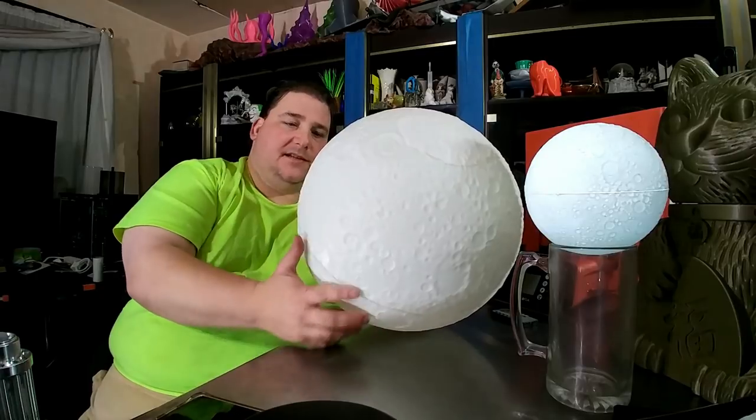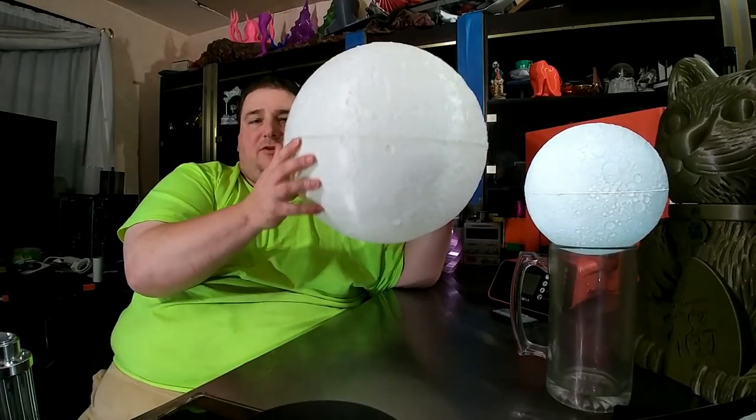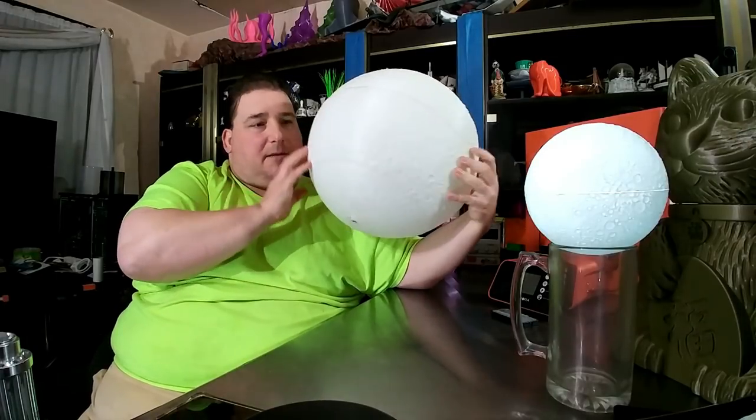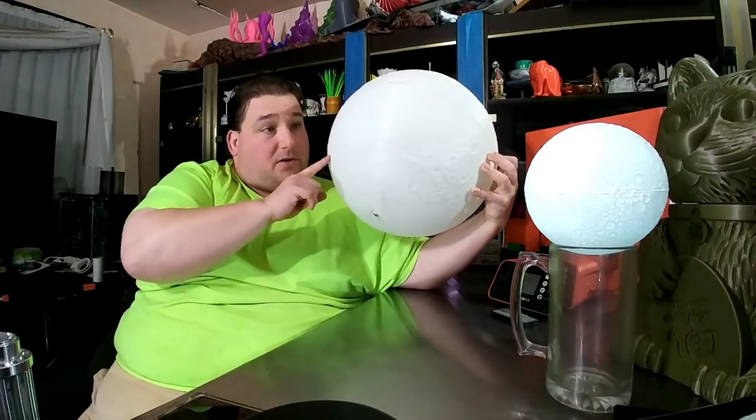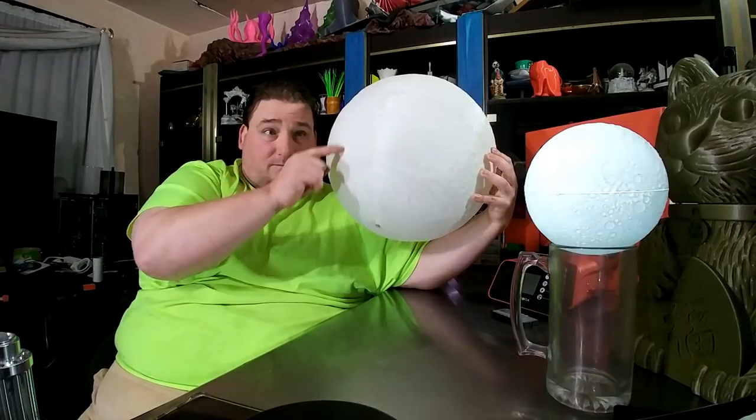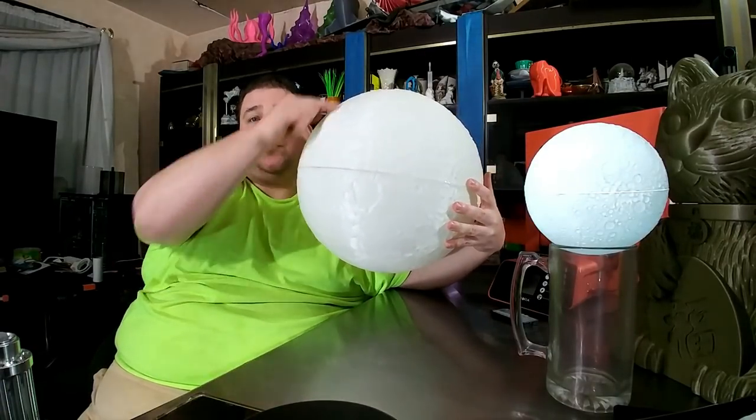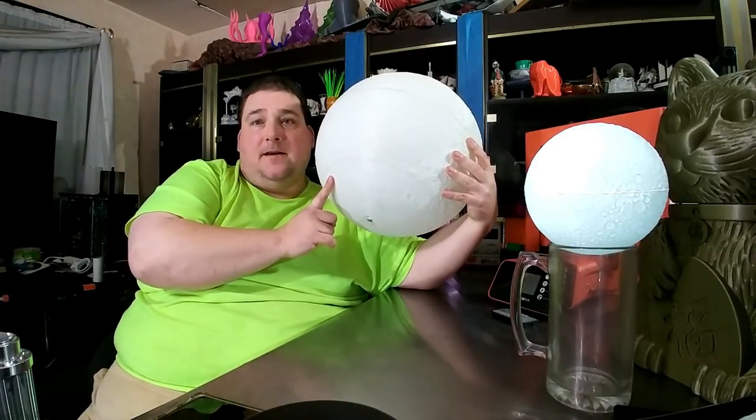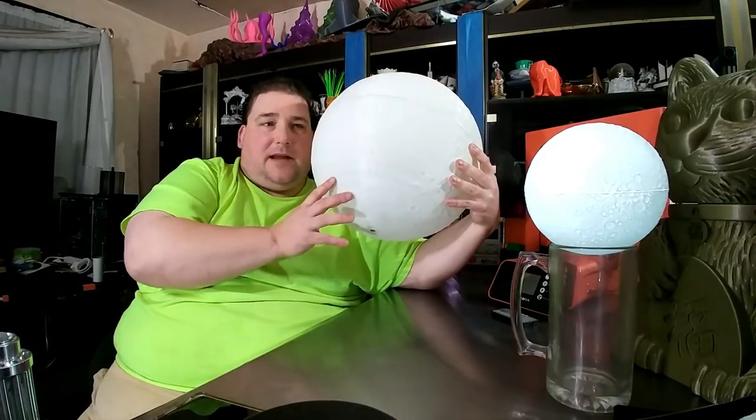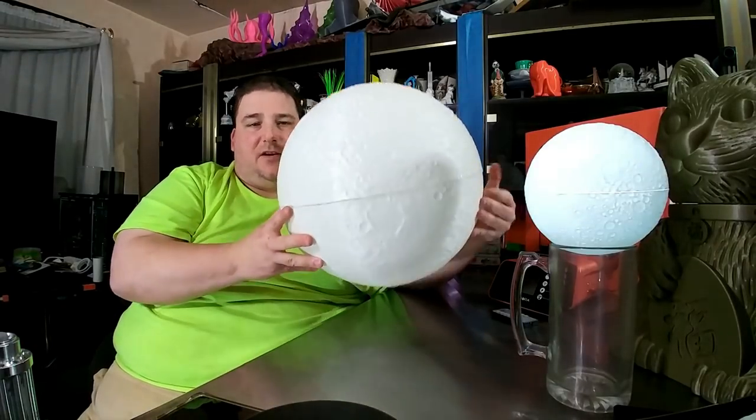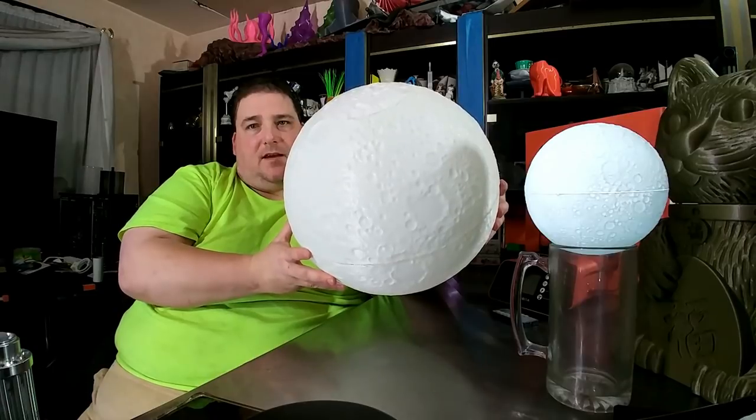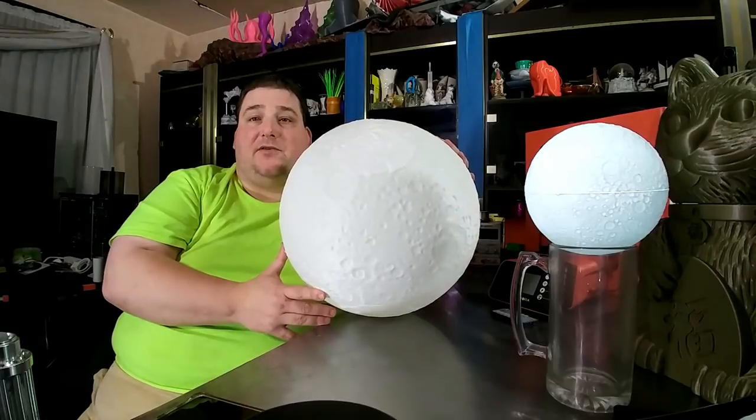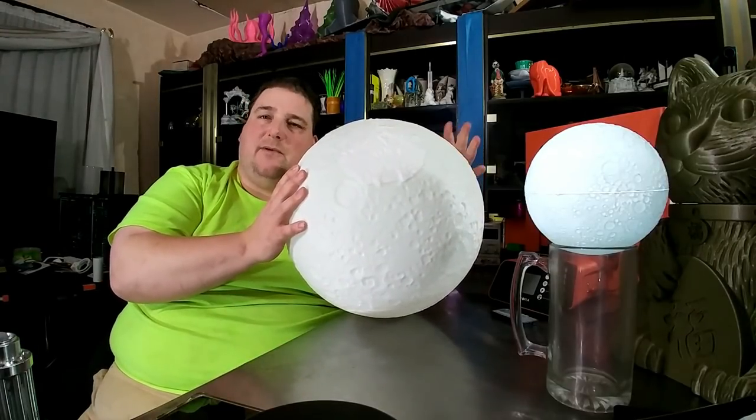I also have an idea to do this instead of in two equal halves which gives you two hemispheres. But that puts that ugly seam right there. Instead I believe based on the failure of that model I can start to print right around here and print two thirds or maybe even three quarters of the moon in one go. And then just print the bottom cap as a separate piece. So I can just put the bottom cap on it and the seam will be down here where it's less visible. And you won't be able to see the seam when you're watching it and looking at it.